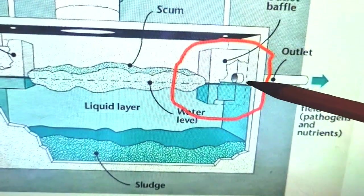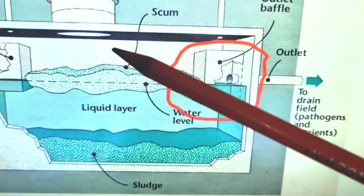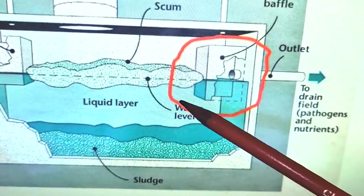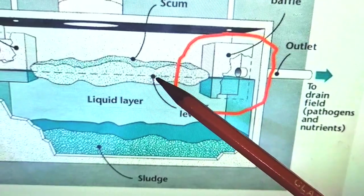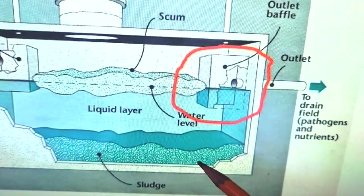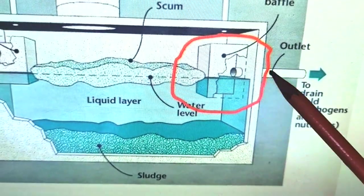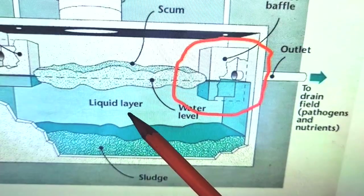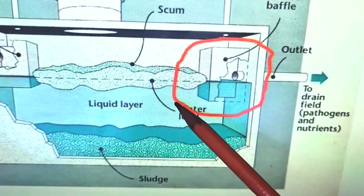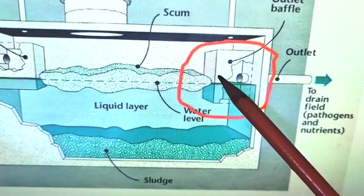Here's the outlet to the septic bed. The purpose of this baffle is very simple. We don't want this scum layer, all this grease and junk to go out that pipe. We don't want the sediment, the sludge at the bottom to go out this pipe. All we want to go out the pipe is this liquid layer, this clear stuff. Well, that's all we want. So this baffle keeps the scum out.